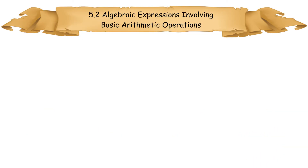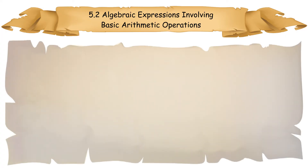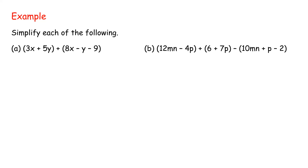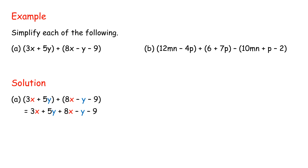5.2 Algebraic Expressions Involving Basic Arithmetic Operations. Addition and subtraction of two or more algebraic expressions: gather the like terms first, then add or subtract the like terms. Example A: 3X plus 5Y plus 8X minus Y minus 9. Gather like terms, then add or subtract. Equals 11X plus 4Y minus 9.